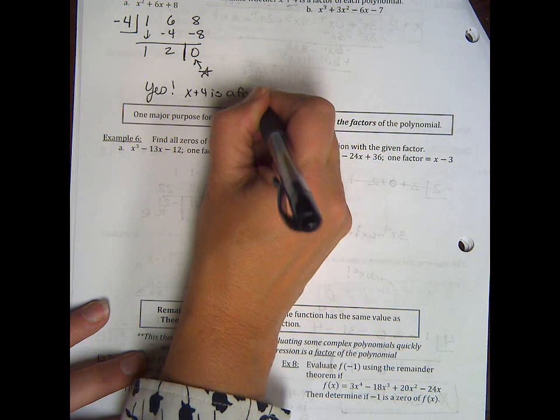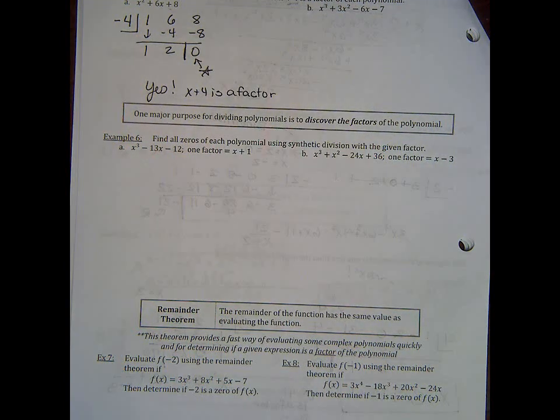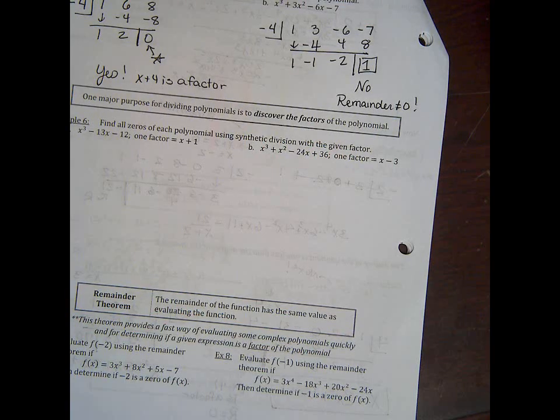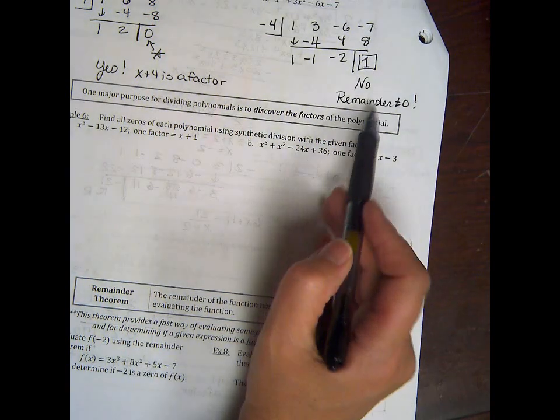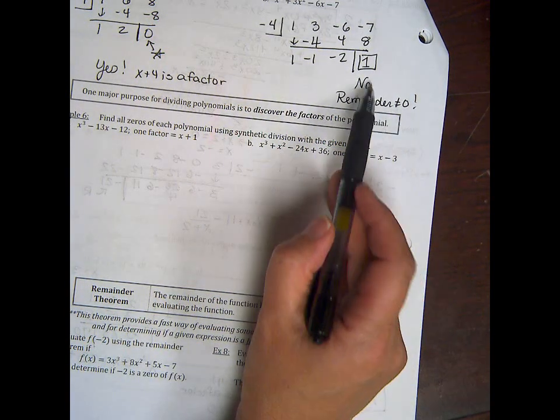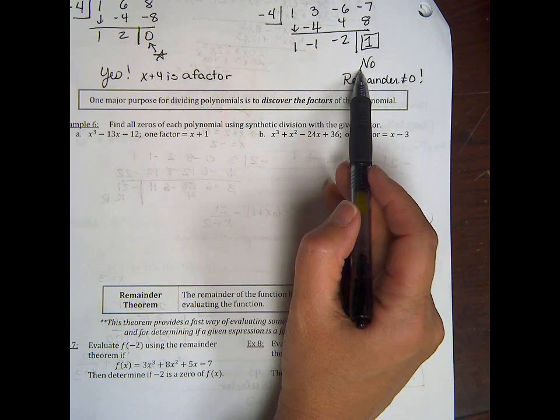Okay, so now you try it on the next one on B and see if x plus 4 again is a factor of x cubed plus 3x squared. Okay, so hopefully you divided it and notice that the remainder came out to be 1. The remainder has to be 0 to be a factor, so the answer is no, it is not a factor. Make sure you answer the question. It's a yes or no question.